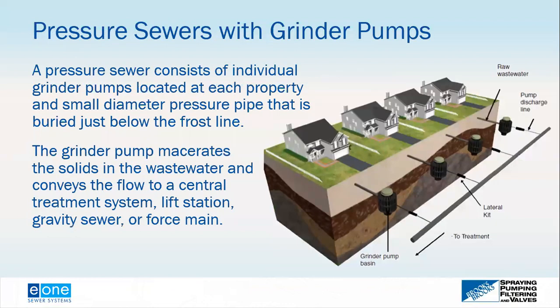The pressure sewer system, on the other hand, uses pumps. There is a grinder pump located at each property and a small diameter pipe buried just below the frost line. The grinder pump macerates solids in the wastewater to very fine particles and conveys it to either a central wastewater treatment system, another collection system, a gravity sewer, a lift station, a gravity force main, or a gravity manhole. Because the solids are macerated and a pump moves them, the pipe for a low pressure sewer system is much smaller in diameter than a typical gravity sewer system.